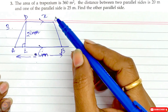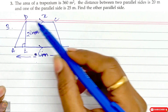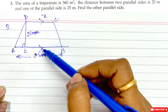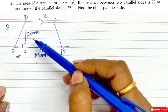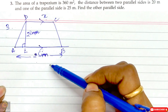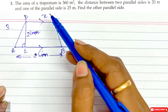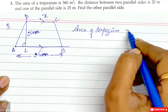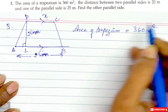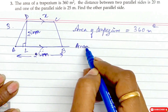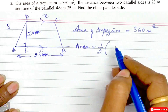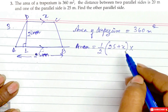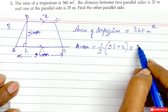Now question number 3. The area of a trapezium is 360 meter square and the distance between the two parallel sides is 20 meter. The two parallel sides are D, C and A, B. If one of the parallel sides is 25 meter, what is the length of D, C or X? So, area of trapezium equals half into sum of parallel sides, giving 360 equals half into (25 plus X) into 20.